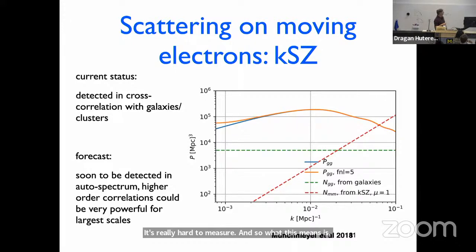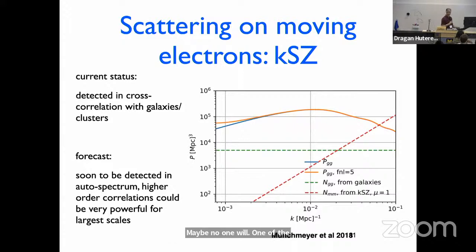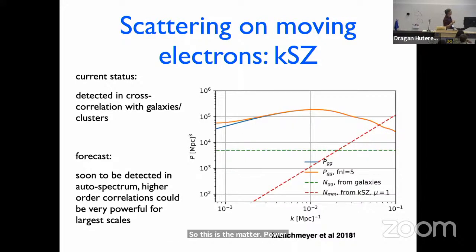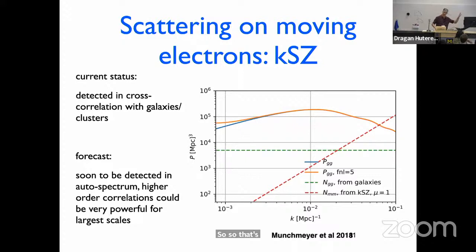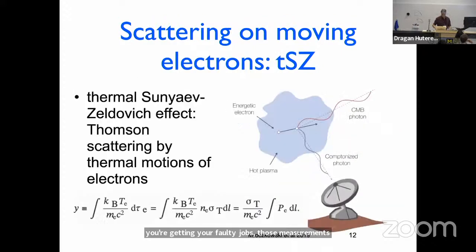One of the reasons you want to measure these large scales is that f_NL — non-Gaussianity — shows up in the galaxy distribution as scale-dependent bias. You get an uptick at low k coming from non-Gaussianity in the density field. That's something that would be exciting to do, but measurements will probably just start to be made when you're getting your faculty jobs.